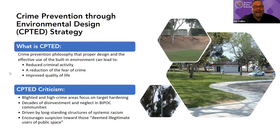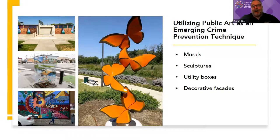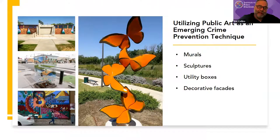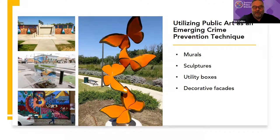IPS is really focused on utilizing public art as a crime prevention technique. Murals, sculptures, utility boxes, and decorative facades can all be utilized as crime prevention techniques. Well-planned, well-intentioned projects with authentic community buy-in can reduce crime. They also instill a sense of pride and ownership from residents of the community. A positive identity and positive self-image matter. The best crime deterrent we've found — and what the research shows — in a neighborhood is one where people care about their community and are engaged in it.